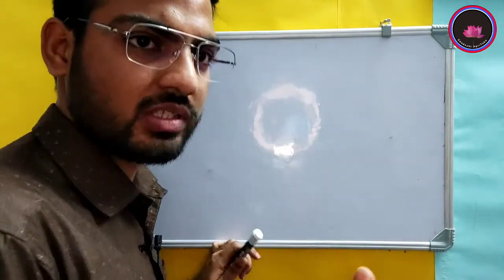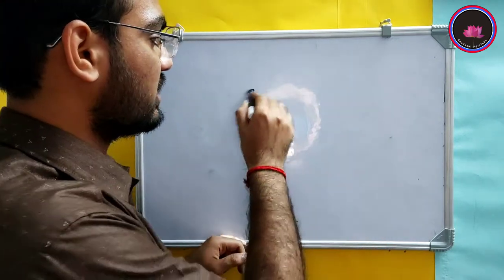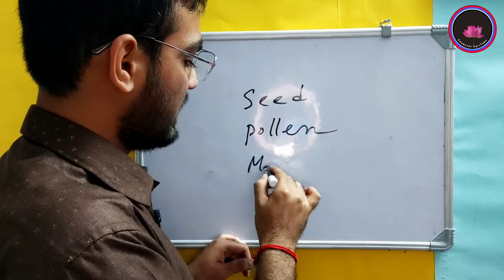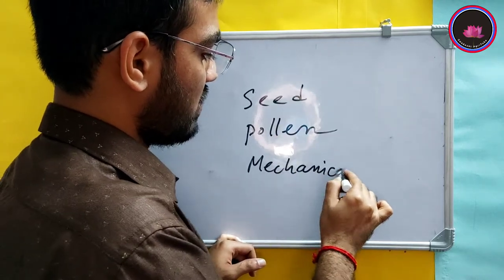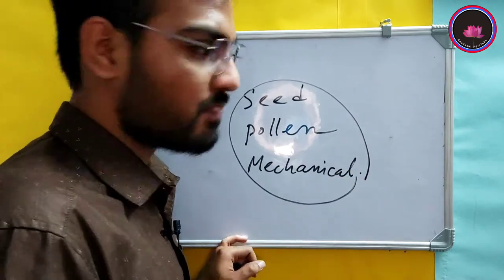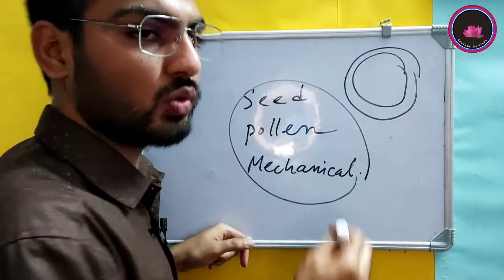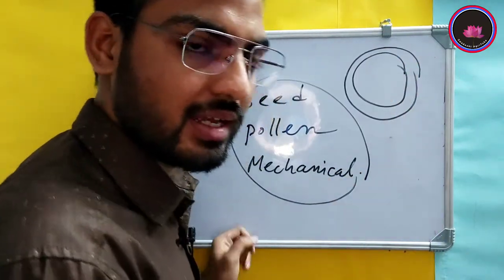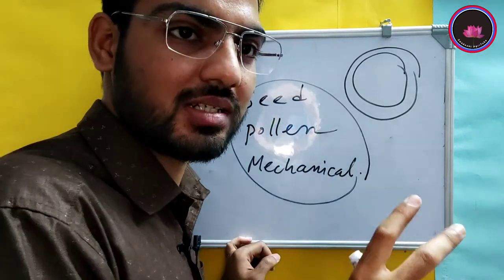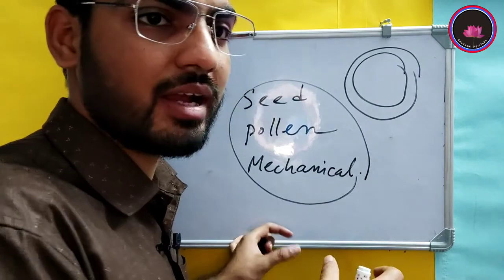How is a viroid transmitted? Viroids are transmitted only by seed, pollen, and mechanical tools. They are not transmitted by any insect, because viroids are just circular single-stranded RNA — they have no protein coat. Since there is no protein, they cannot attach to an insect's body parts, saliva, or enzymes. That is why no insect actually transmits viroids.